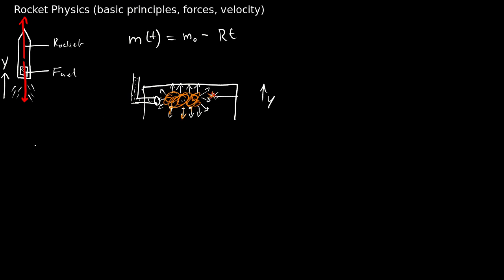Since we have equal and opposite forces, let's say that the force on the rocket equals negative the force on the fuel — on a tiny bit of fuel. Newton said there are two equal and opposite forces; we've analyzed the situation, found our two forces, and now we set them equal.